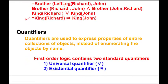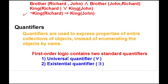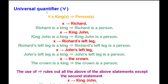Quantifiers are not present in propositional logic — they exist in predicate or first order logic. Quantifiers are used to express properties of an entire collection of objects instead of enumerating objects by name. There are two standard quantifiers: the universal quantifier (∀) and the existential quantifier (∃). For example, the sentence '∀x King(x) ⇒ Person(x)' reads as: 'for all x, if x is a king then x is a person.'